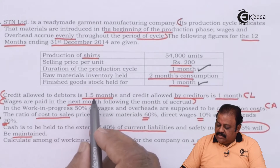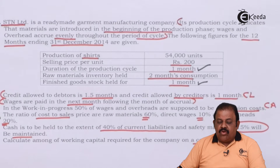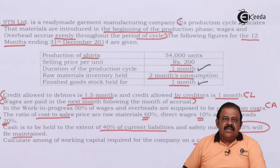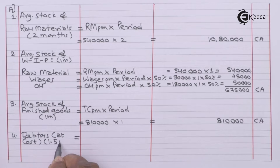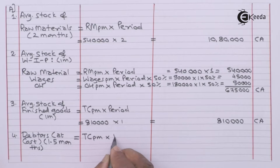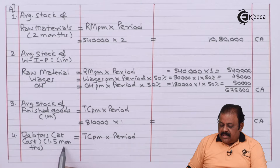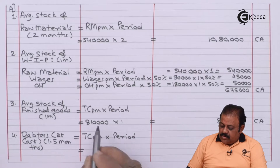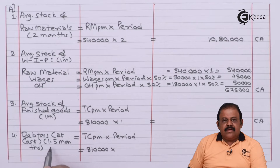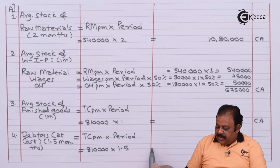Credit allowed to debtors is 1.5 months, and we need working capital on cash cost basis, so we are required to take debtors at cost price. Total cost per month multiplied by period of debtors: total cost per month rupees 8,10,000 multiplied by 1.5 months gives rupees 12,15,000.